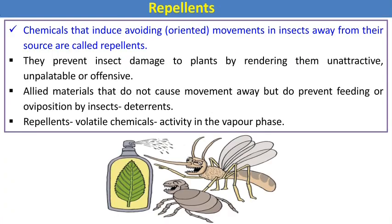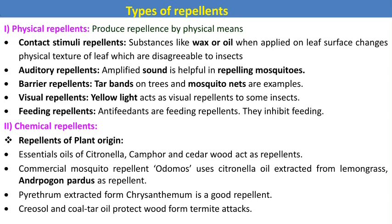Next are repellents — chemicals that induce avoidance movement in insects away from their source. They prevent insect damage to plants by rendering them unattractive, unpalatable, or offensive. There are two types: physical repellents and chemical repellents. Physical repellents include contact stimuli using different oils, auditory repellents such as sounds against mosquitoes, and barrier repellents such as tar bands against tree pests.